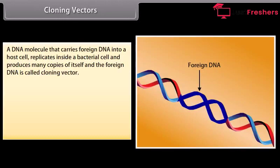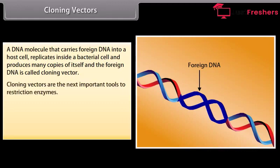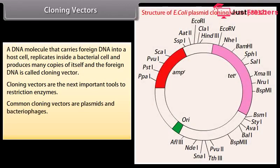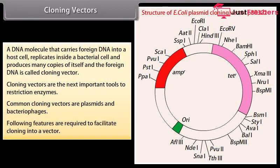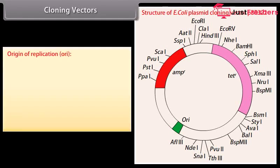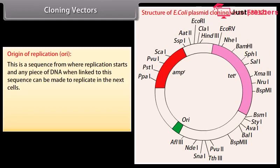Cloning vectors. A DNA molecule that carries foreign DNA into a host cell, replicates inside a bacterial cell, and produces many copies of itself and the foreign DNA is called a cloning vector. Cloning vectors are the next important tools after restriction enzymes. Common cloning vectors are plasmids and bacteriophages. The following features are required to facilitate cloning into a vector. Origin of replication: this is a sequence from where replication starts, and any piece of DNA when linked to this sequence can be made to replicate in the host cells.